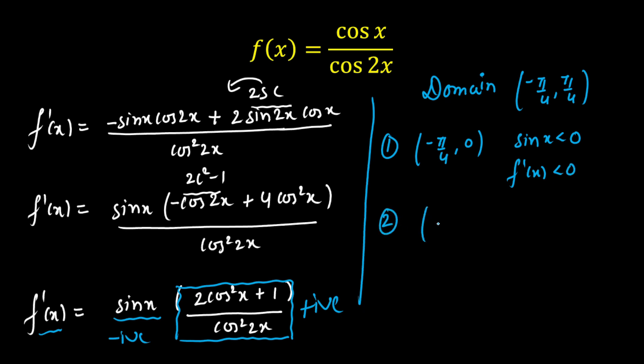And second, when I take the interval 0 to pi by 4, in this interval sin x is positive. That means this is the deciding factor for f prime of x. So f prime of x sign will be decided by sin x. This will be greater than 0.